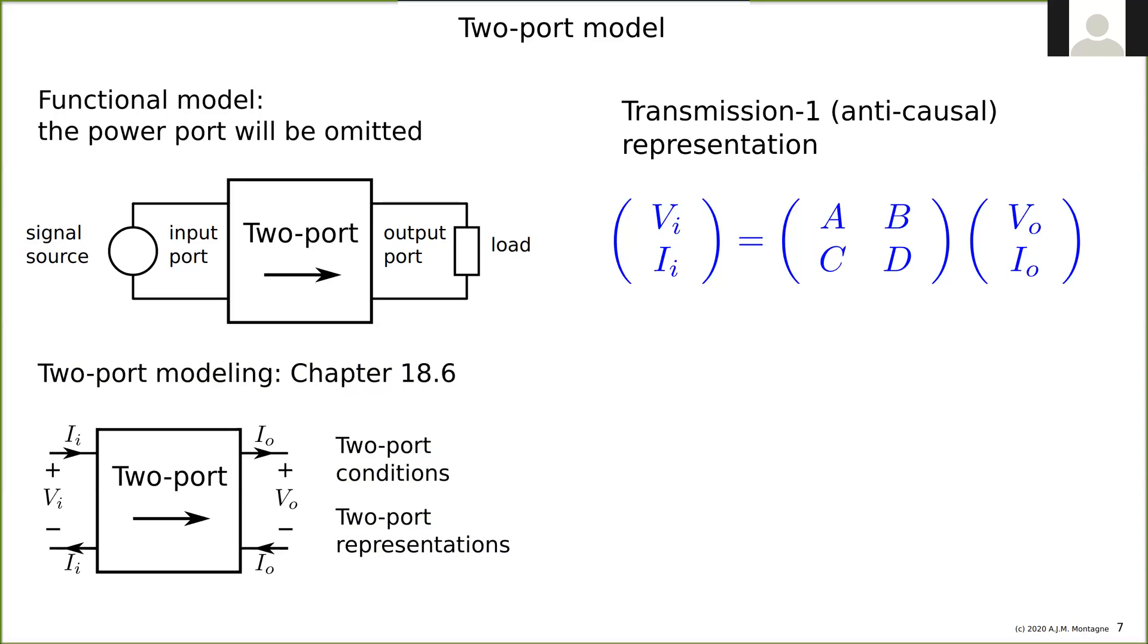That's where you find everything about models. Which one is right? Well, the one that is most convenient. All models are wrong, but some are useful. We think what is useful for amplifier design is the transmission-1 or anti-causal representation, shown here in blue.